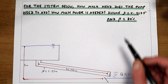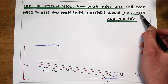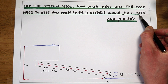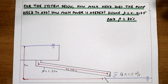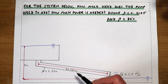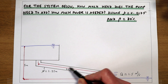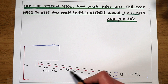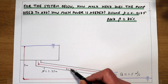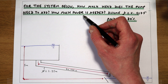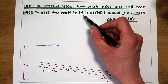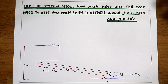We're told in the question that we can assume the friction factor as 0.0175, and what we want to work out is how much head a pump would need to add to make this system work, and how much power that pump would require to operate this system.